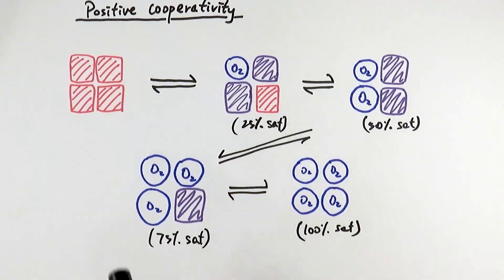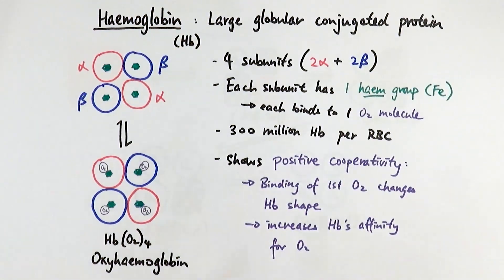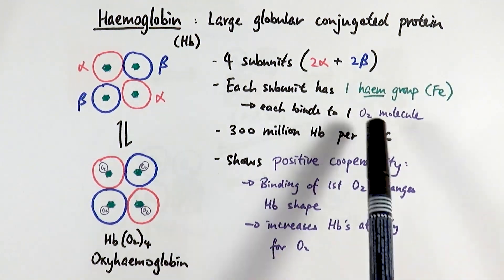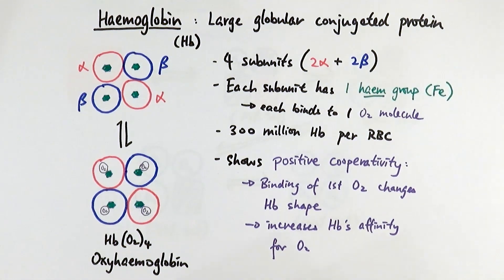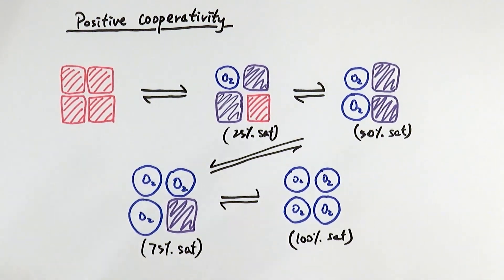This whole process is reversible — indicated by a double-headed arrow — because when haemoglobin reaches tissues or organs it needs to release oxygen for use in respiration. In summary, haemoglobin is a large globular conjugated protein with four subunits, each containing a heme group, allowing it to bind four oxygen molecules total. It shows positive cooperativity: as each oxygen binds, it changes the haemoglobin's shape and increases its affinity for the next oxygen, with subunit structures gradually changing until 100% saturation is reached, and the process is fully reversible.